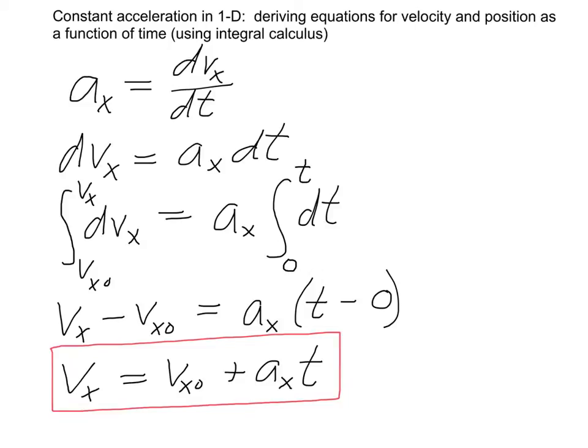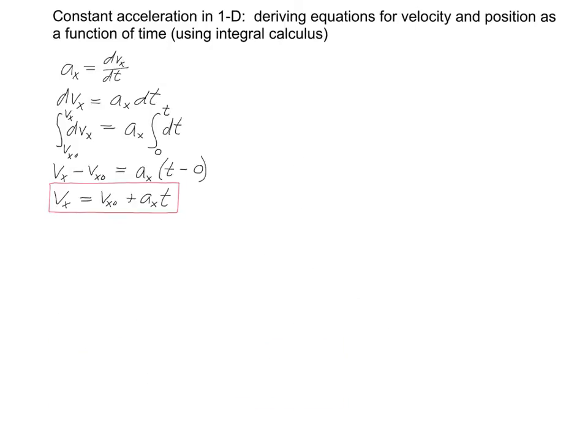Let's resize this and get it out of the way. To derive the position as a function of time, for motion with constant acceleration in one dimension, we start with the corresponding definition of velocity. We put this together with the result we just obtained.